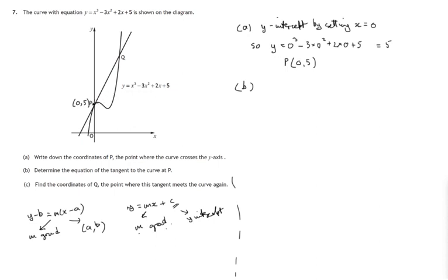And we know the gradient of a tangent at this point would be the same as the gradient of this curve at that point. So we would have to look at the equation, the cubic equation, and determine the gradient formula for any point in this curve. So that involves differentiation.